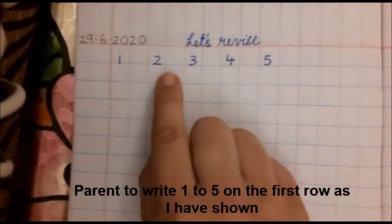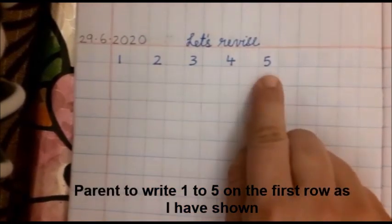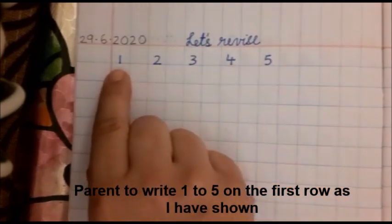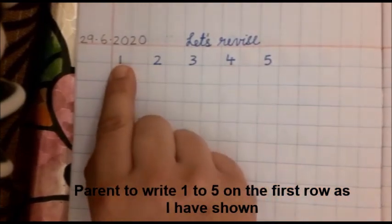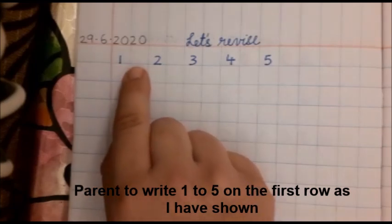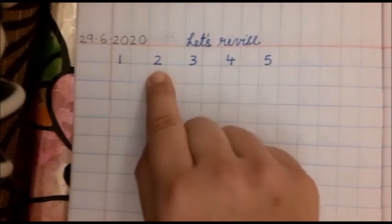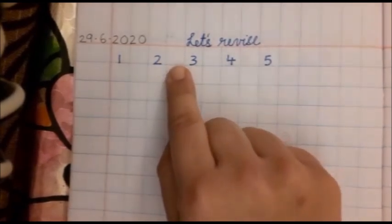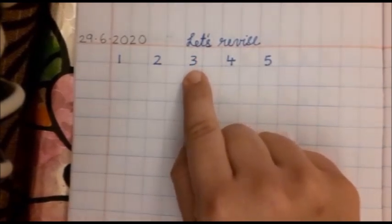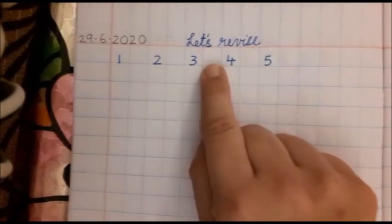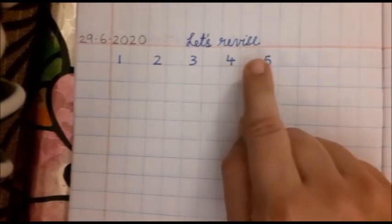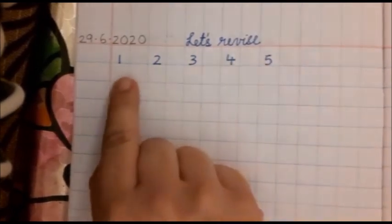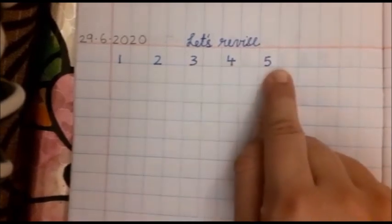And write these numbers below like this. First square, on the first square 1. Number 1. Then leave one square number 2. Then leave one square number 3. Then leave a square number 4. And then number 5.